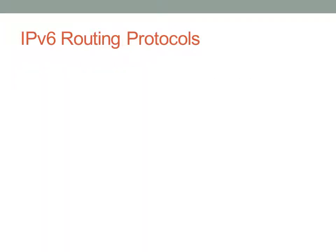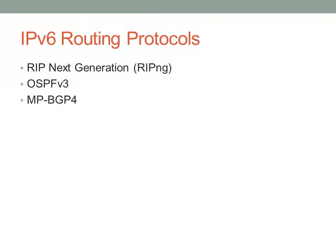IPv6 routing protocols — we talked about IPv4 routing protocols. IPv6 still has RIP, called RIP-NG or RIP Next Generation. It also has a version of OSPF and a version of BGP specifically for IPv6. EIGRP for IPv6 has also been implemented by Cisco, so all of the routing protocols you're familiar with carry over to IPv6.